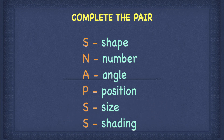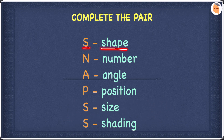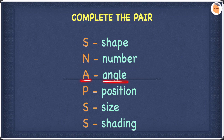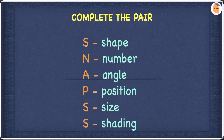Before we start the question, let's have a look at SNAPS. S stands for shape — how does the shape change? N stands for number — does the number of sides or the number of shapes change? A stands for angle — if a shape rotates, by how many degrees does it rotate? P stands for position — does the position of a shape change? S stands for size — does the size of a shape change? And S stands for shading — does the color or the shading pattern change?